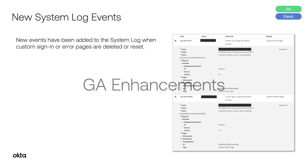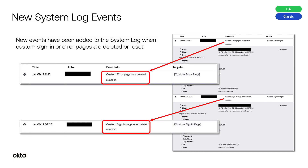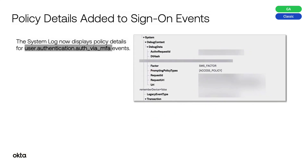Let's now take a look at the GA enhancements released this month. New system log events have been added when custom sign-in or error pages are deleted or reset. Policy details added to sign-on events: the system log now displays policy details for user authentication via MFA events.